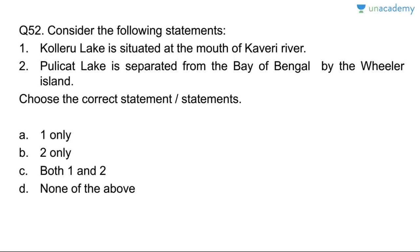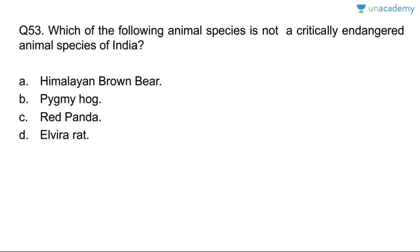Question fifty-two: Kolleru Lake is situated at the mouth of the Kaveri River — wrong; it is situated between the Krishna and Godavari rivers. Pulikat Lake is separated from the Bay of Bengal by Wheeler Island — wrong; it is separated by Sri Harikota Island. Answer is D, both statements are wrong.